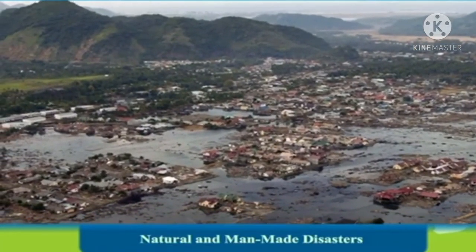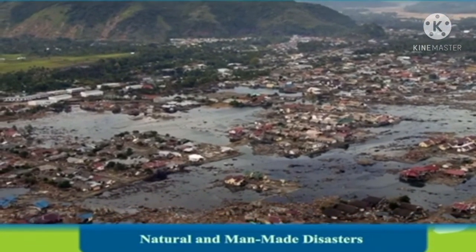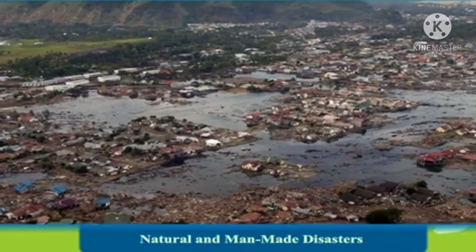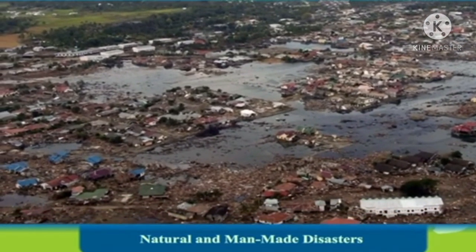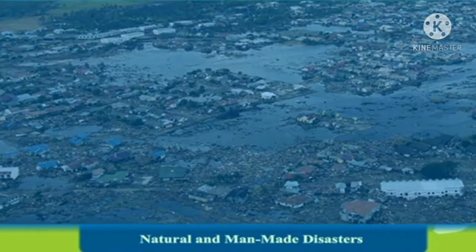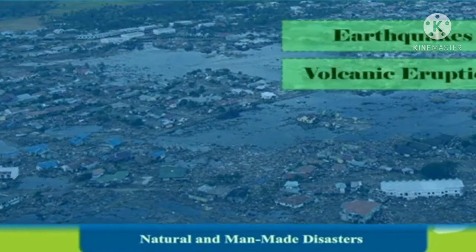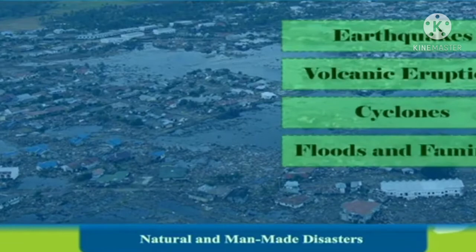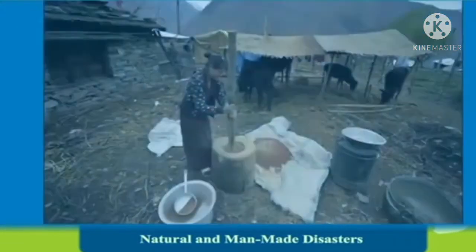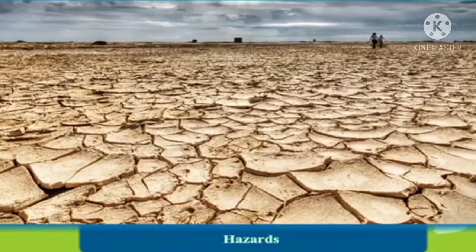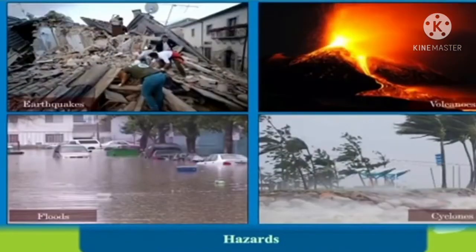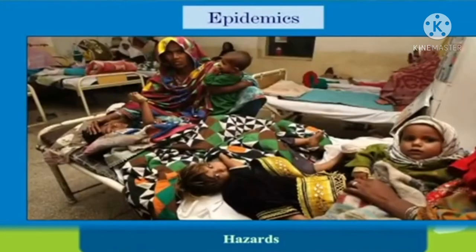Today, we are going to discuss natural and man-made disasters. The forces of nature have always pushed back against man's progress since time immemorial. Natural disasters include earthquakes, volcanic eruptions, cyclones, floods, famines, and droughts. Humans have learned to live with nature and the onslaught of natural disasters using technology to control it. Earthquakes, volcanoes, floods, and cyclones are all hazards.